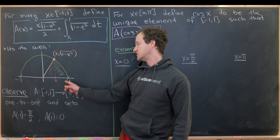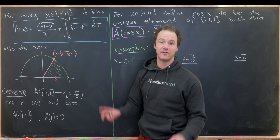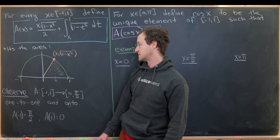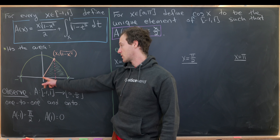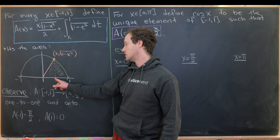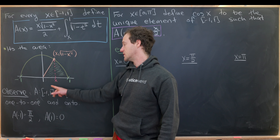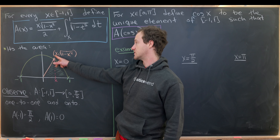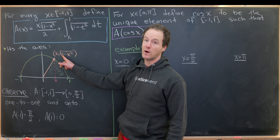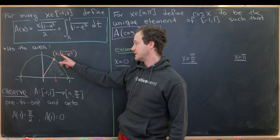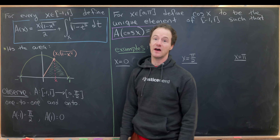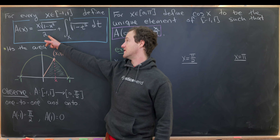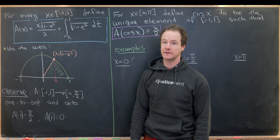The sector can be broken into two parts. The first part is a triangle: the base of the triangle is x, and the height is the square root of one minus x squared, which makes the area half the product of those two terms — that is, the first term in our definition.